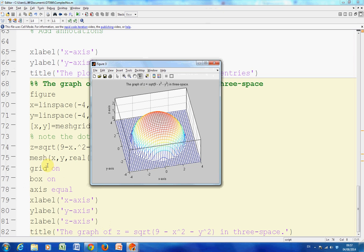We got that by mesh. We put on the grid there, the box on. We got these boxes as well, at the back. And then we made the axis equal. Then we put on lines 79, 80, 81, we put on a few labels, and then we put on a title.